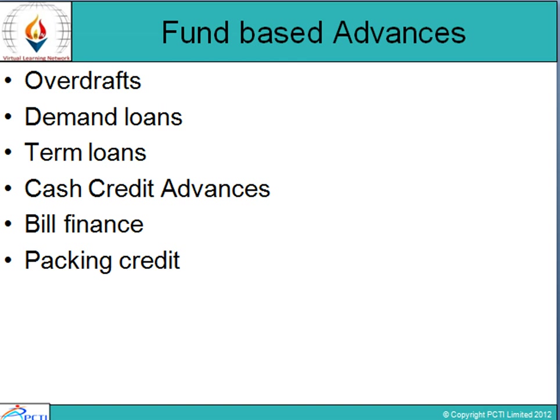Term loans are sanctioned for acquisition of fixed assets like land, building, office equipment, and for purchase of transport vehicles and other vehicles. Then comes cash credit advances: a cash credit account is a drawing account against credit granted by the bank, operating in the same way as a current account in which cash credits are allowed. Then comes bill financing: advances against inland bills are sanctioned in the form of limits for purchase of bills. Then comes packing credit: it is an advance given to an exporter who holds a code number assigned by the Directorate General of Foreign Trade.